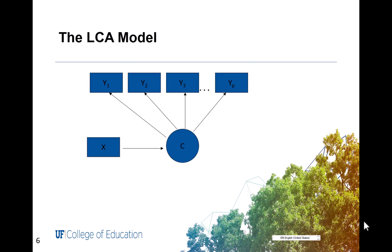not a continuous one. Y1 to YP are the indicators, which for latent class analysis, these indicators are categorical. You can have latent classes with continuous indicators. If all indicators are continuous,